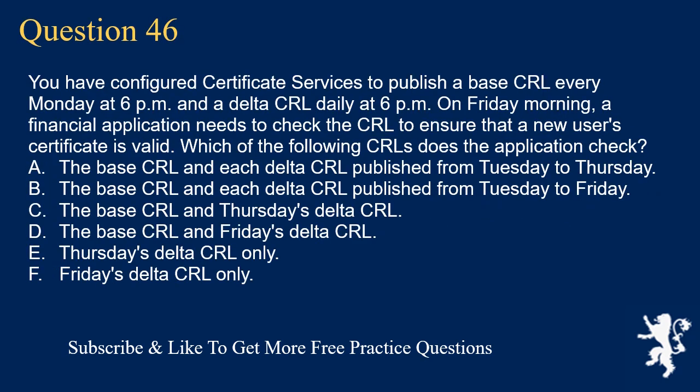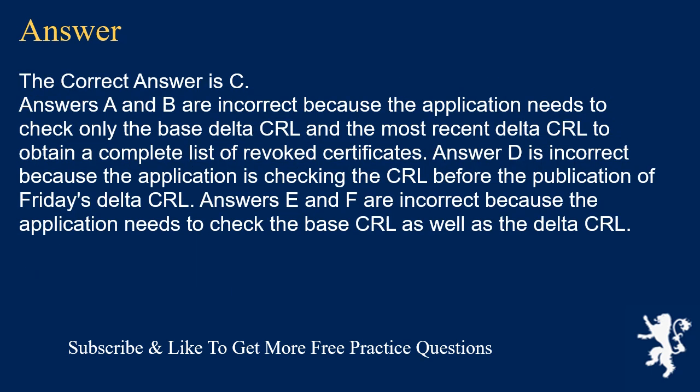Question 46. You have configured certificate services to publish a base CRL every Monday at 6pm and a delta CRL daily at 6pm on Friday morning. A financial application needs to check the CRL to ensure that a new user's certificate is valid. Which of the following CRLs does the application check? A. The base CRL and each delta CRL published from Tuesday to Thursday. B. The base CRL and each delta CRL published from Tuesday to Friday. C. The base CRL and Thursday's delta CRL. D. The base CRL and Friday's delta CRL. E. Thursday's delta CRL only. F. Friday's delta CRL only. The correct answer is C. Answers A and B are incorrect because the application needs to check only the base CRL and the most recent delta CRL to obtain a complete list of revoked certificates. Answer D is incorrect because the application is checking the CRL before the publication of Friday's delta CRL. Answers E and F are incorrect because the application needs to check the base CRL as well as the delta CRL.